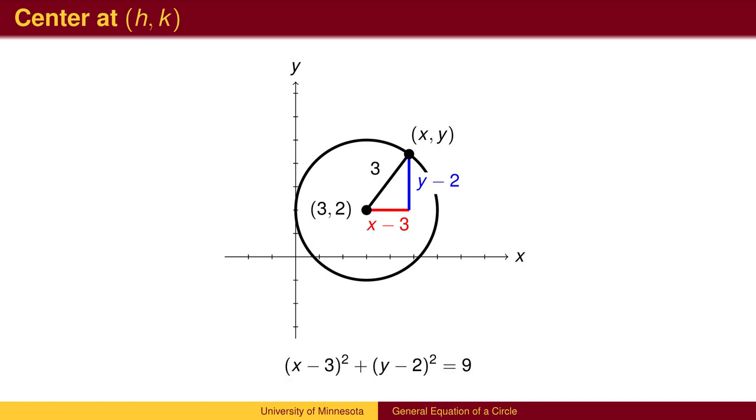In this case, the Pythagorean Theorem gives us x minus 3 squared plus y minus 2 squared equals 9.